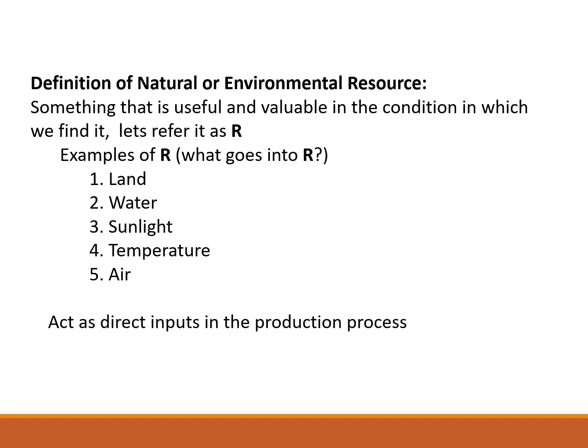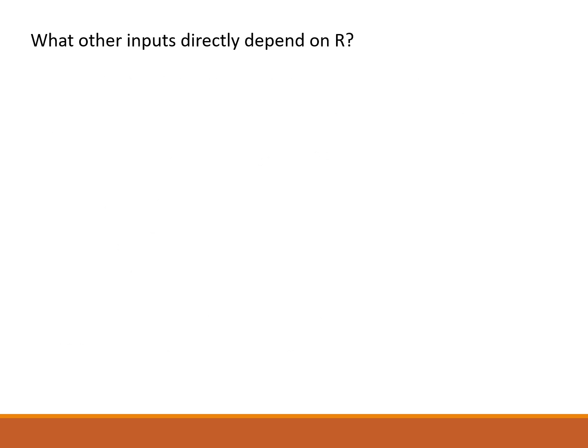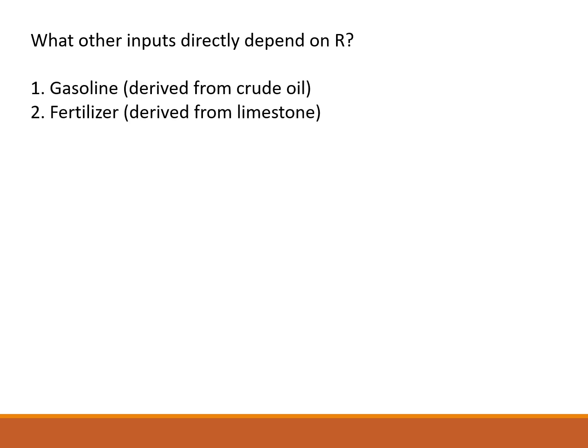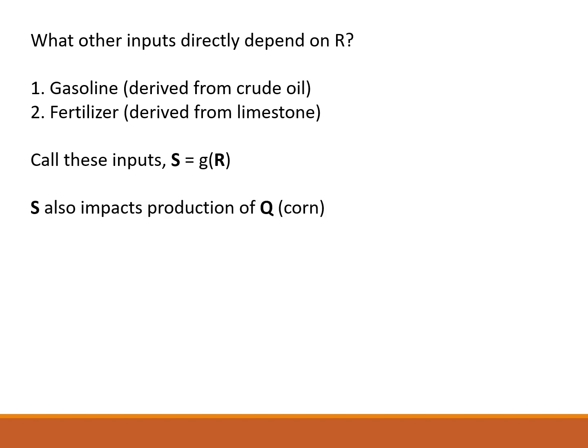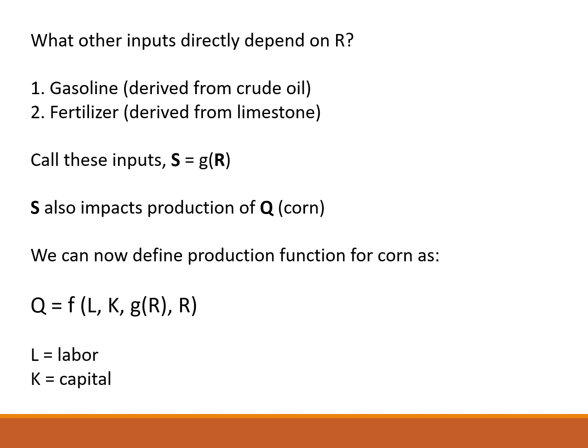Natural resources act as direct inputs in the production process. For example, in the production of corn, some inputs directly depend on natural resources — for example, gasoline or fertilizer. We call these inputs S, which are a function of the natural resources. S also impacts production of corn. We can define the production function for corn as Q, equal to a function of labor, capital, natural resources R, and inputs S that directly depend on natural resources.